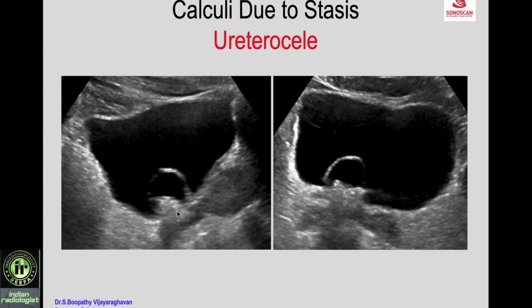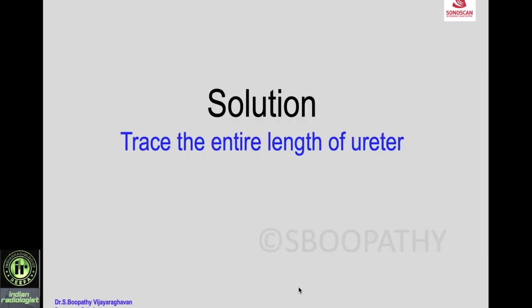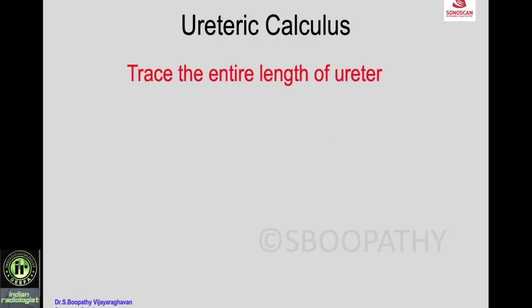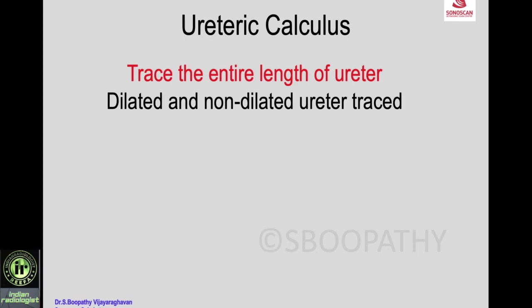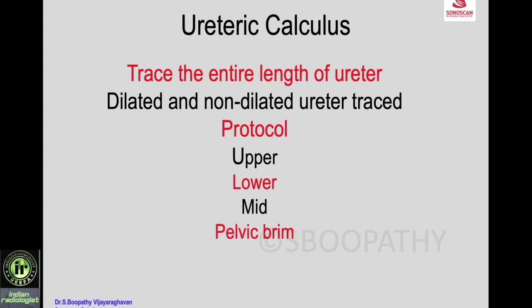An example of a ureterocele with urinary stasis and a calculus within the ureterocele. To summarize the solution for picking up ureteric calculi: trace the entire length of the ureter whether dilated or not. The protocol is to first see the upper ureter, then the lower ureter where most calculi are found, then trace back through the mid ureter and pelvic brim. Look for peristalsis — you will see the calculus within the fluid-distended ureter or the calculus will move with peristalsis, confirming it is ureteric. Endovaginal scan or TRUS can also be used to advantage.